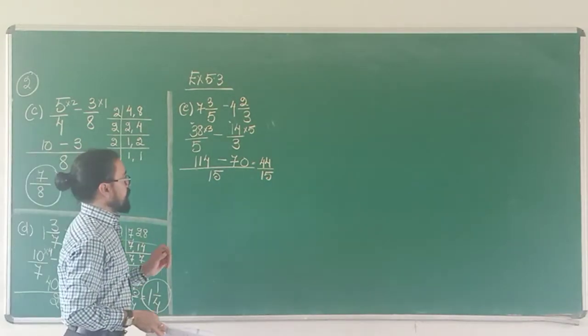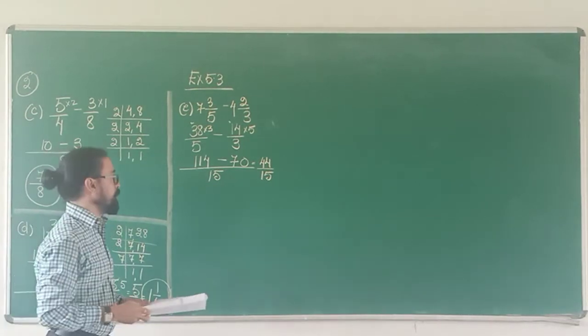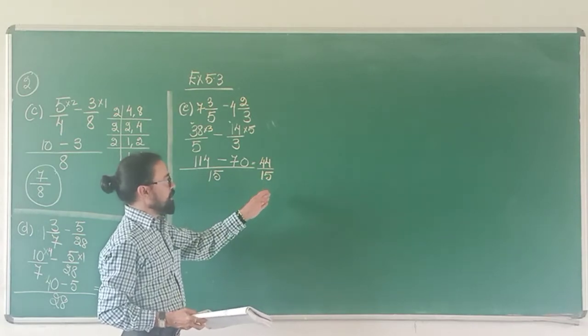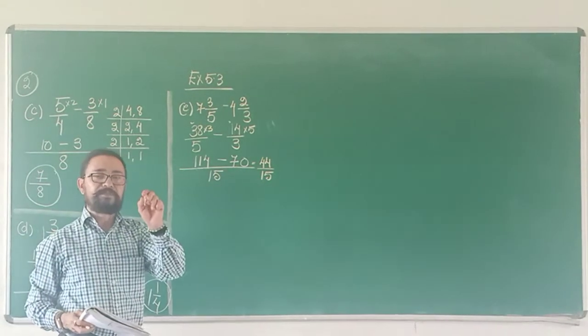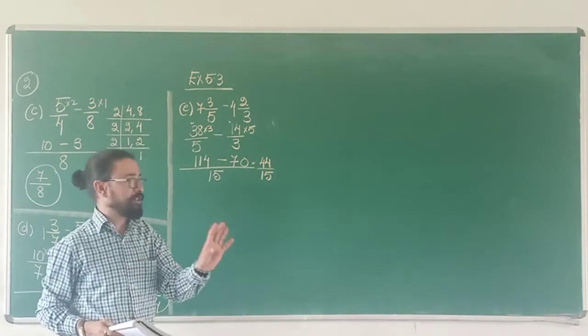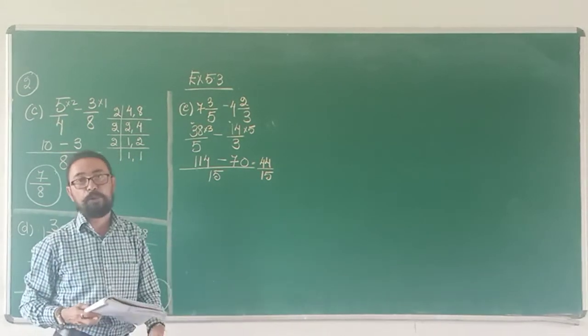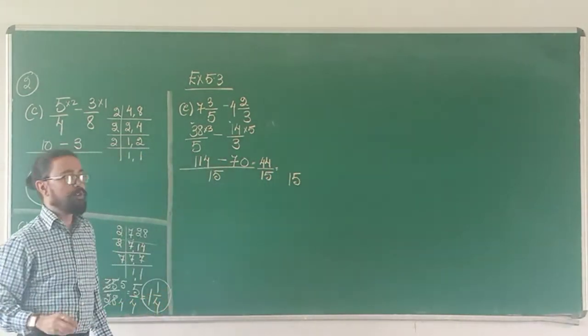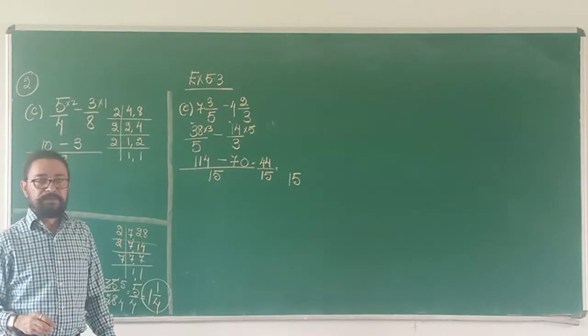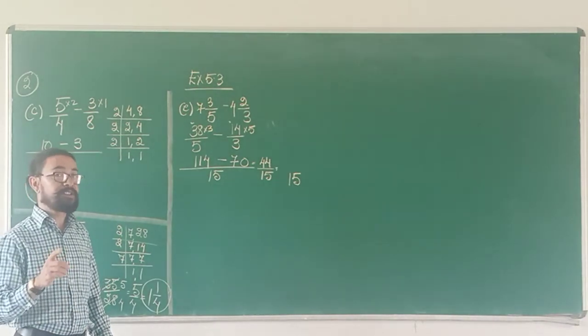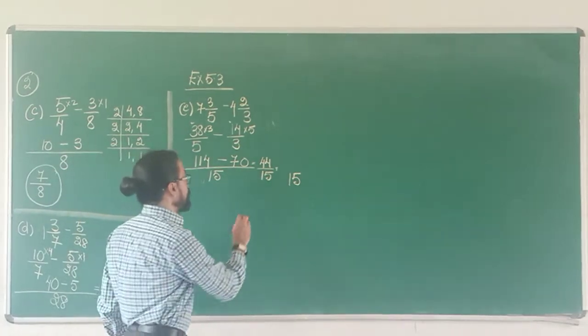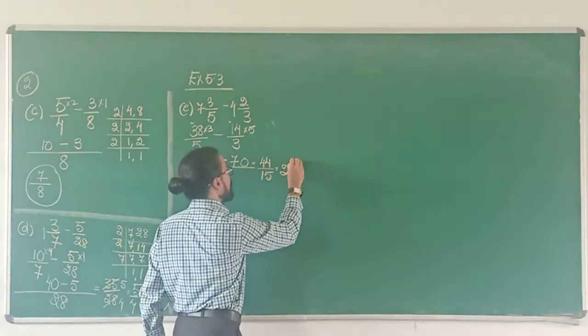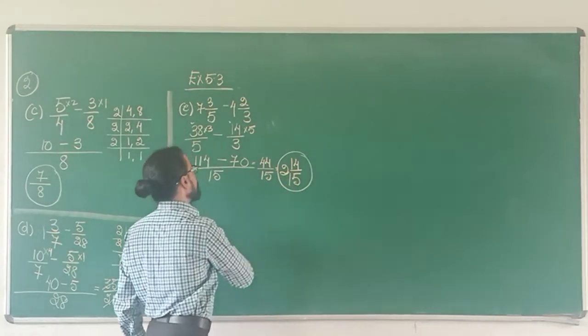Now I ask myself can it be reduced? No it cannot be reduced. Not by 2, not by 3, not by 5. Because I have to find a factor that can divide both the numerator and the denominator. There is no factor of 44 and 15 that can divide both of them. So I change it to a mixed fraction. 15 goes into 44 how many times? 15 1's are 15, 15 2's are 30, 15 3's are 45. But this is 44. So 15 2's are 30. How much am I left with? 14. So 2 14 upon 15 is the answer.